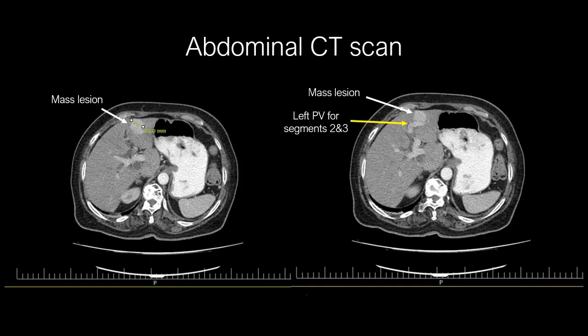Abdominal CT scan reported an enhancing mass lesion in the left lobe of the liver. The patient was referred for EUS for more evaluation of the lesion.